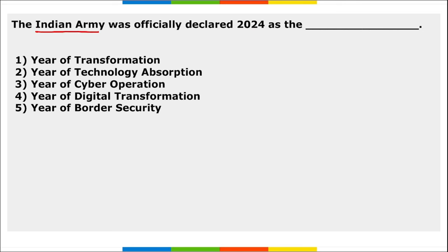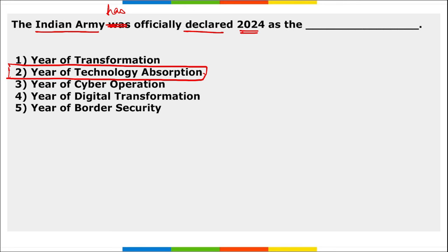The Indian Army has officially declared 2024 as the Year of Technology Absorption — not adoption, but absorption. This symbolizes a dedicated commitment to integrating cutting-edge and new-age technologies, fostering development, and promoting innovation.